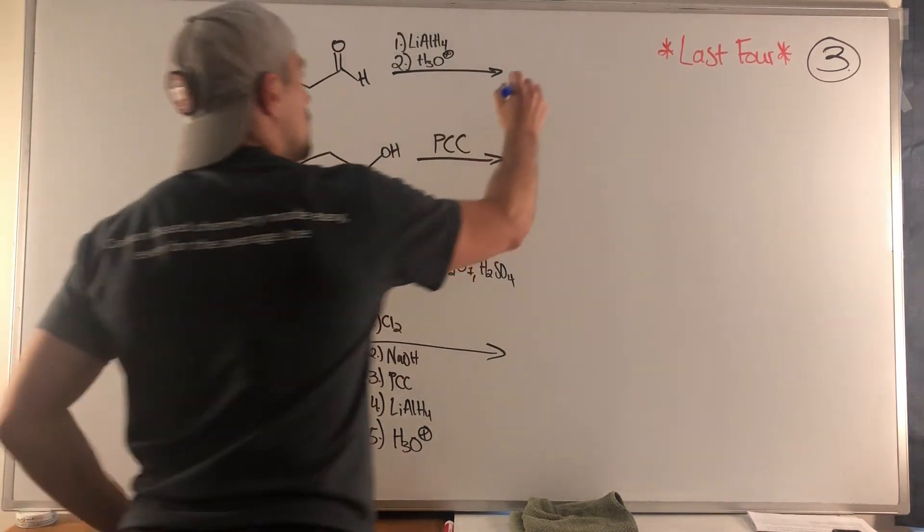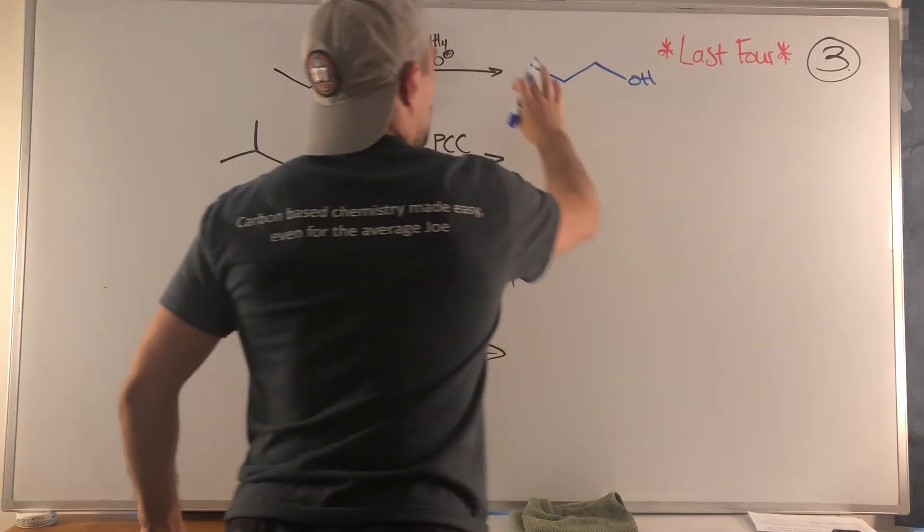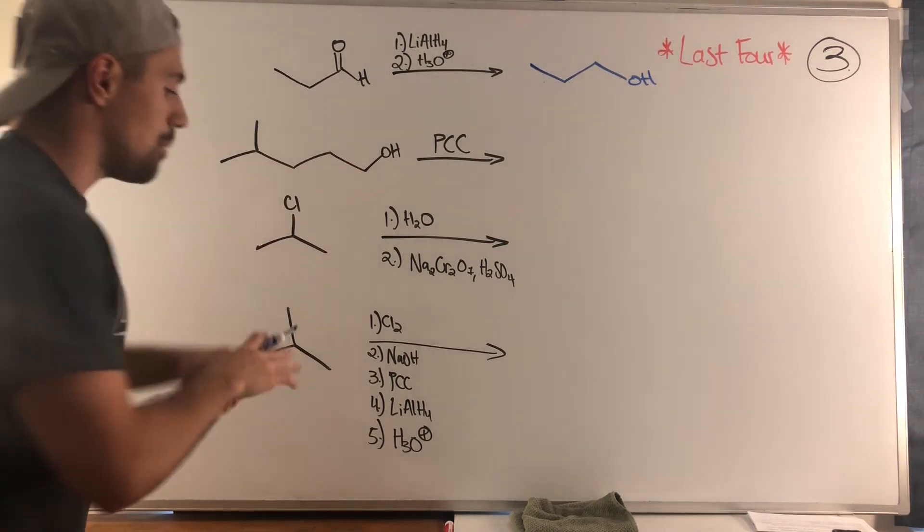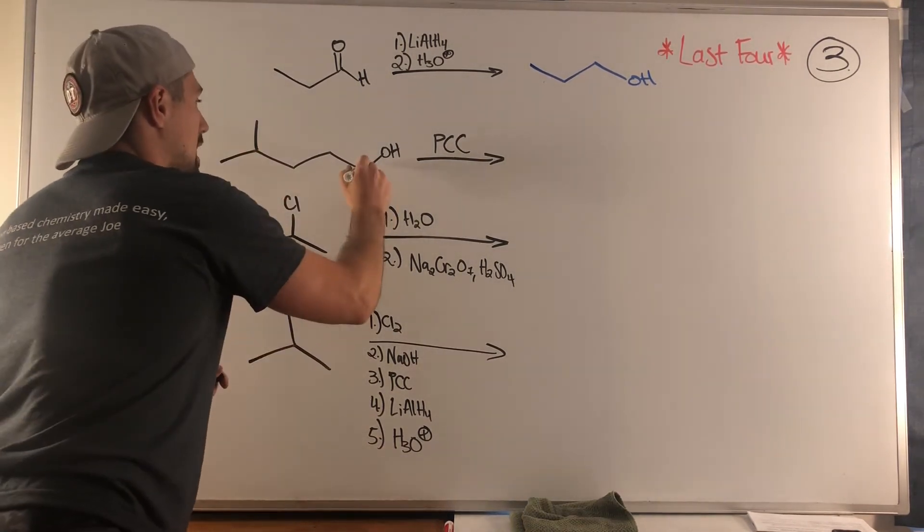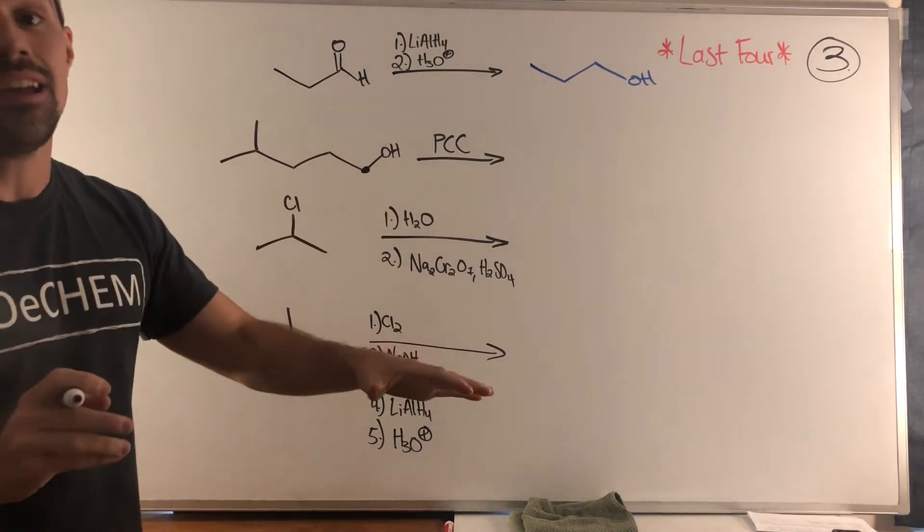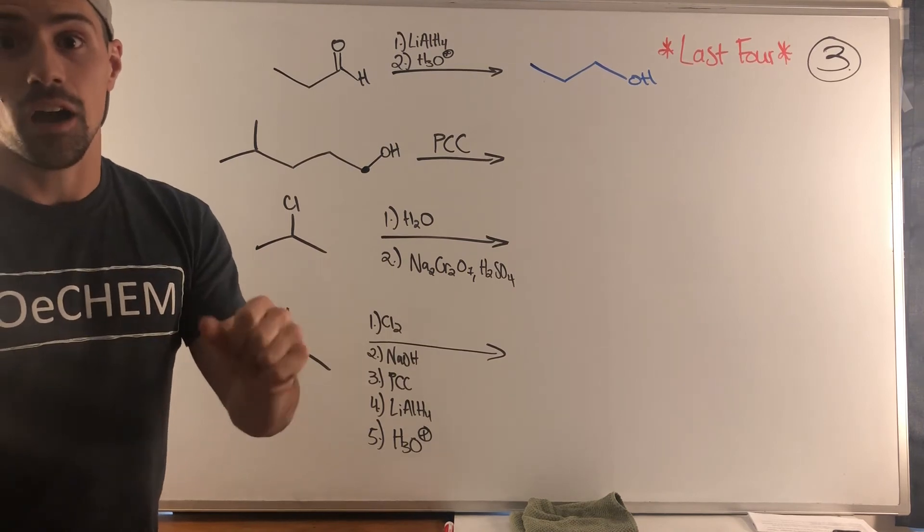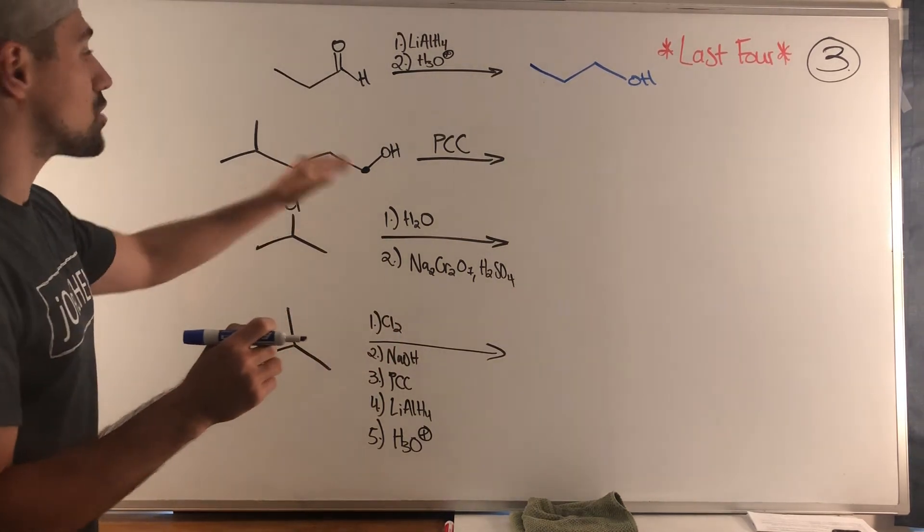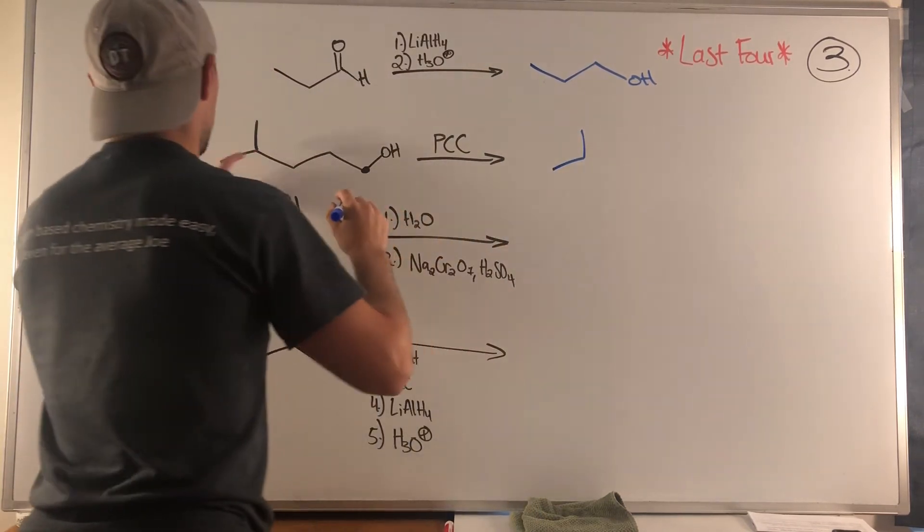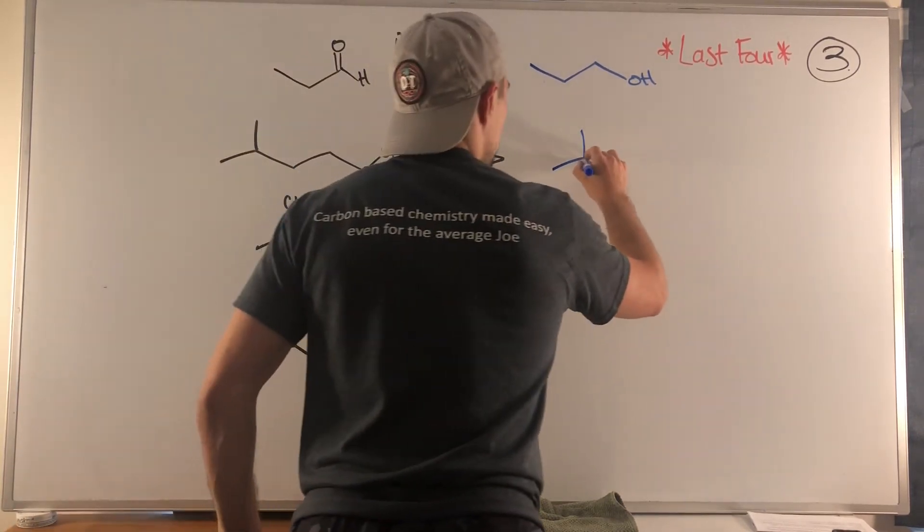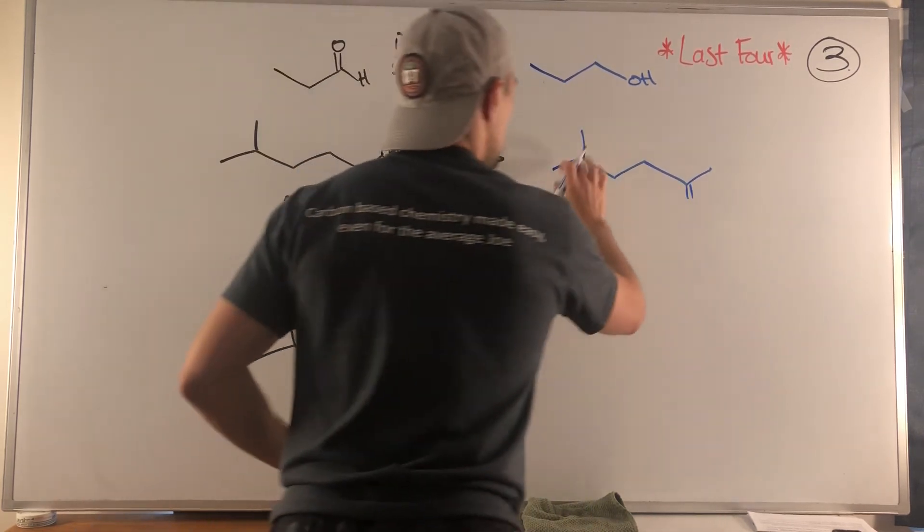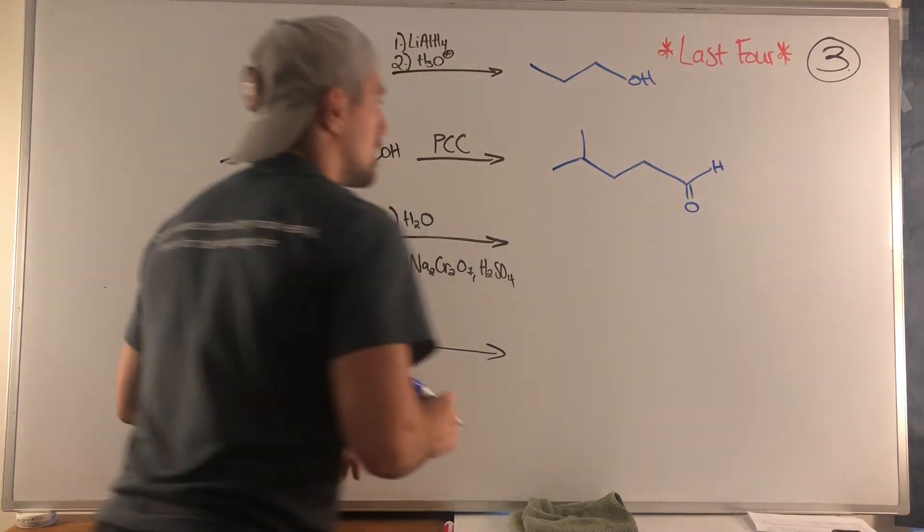Second problem, we have a primary alcohol right here. We know Jones would take this all the way to a carboxylic acid, however PCC, a more mild oxidizing reagent, stops at the aldehyde. Let me make sure I draw the correct number of carbons - one, two, three, four, five. Counting is the hardest part I'm telling you.